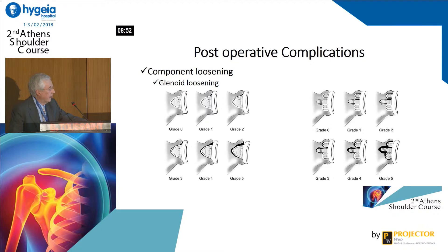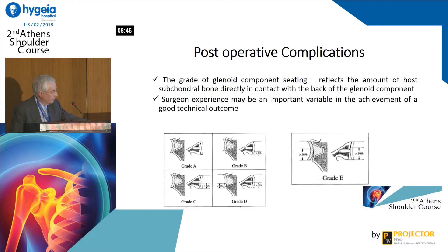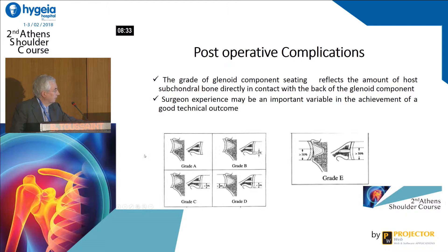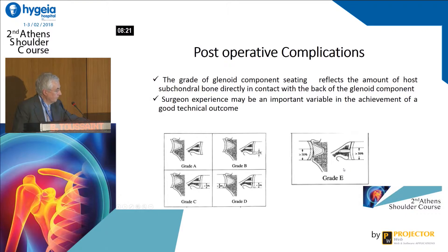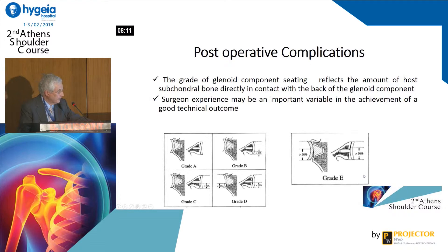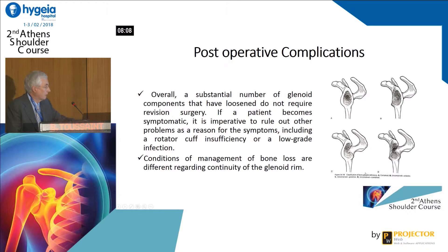Humeral component failure occurs in 47 shoulders with a prevalence of 0.2%. Glenoid loosening differs depending on whether you have a keel or pegs as the glenoid design. It's very important to check and measure the progression of this loosening. Most importantly, check the glenoid component seating, because in grades B, C, D, and E, you are exposed to the rocking horse effect of the glenoid component and loosening occurs very easily.